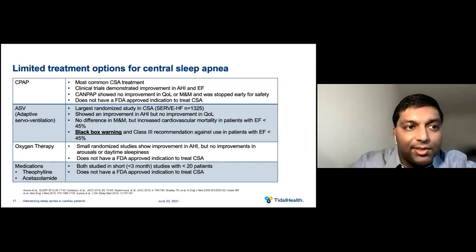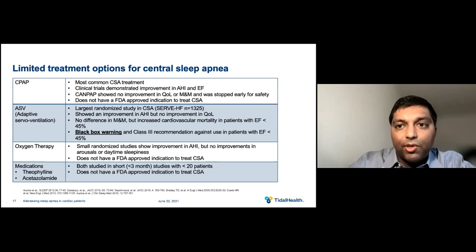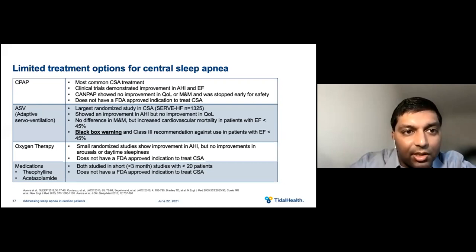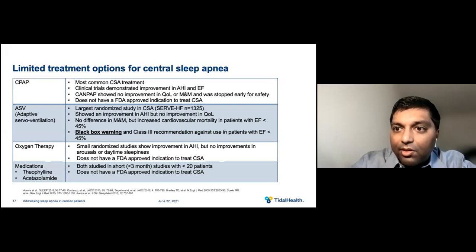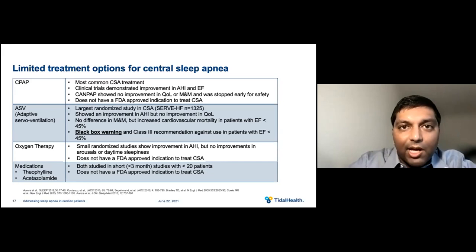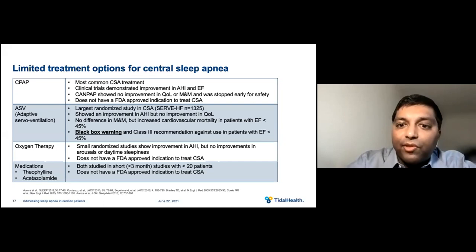Let's talk about the limited treatment options for central sleep apnea. First, CPAP, or continuous positive airway pressure, is the most common — the patient wears a mask connected to a machine which provides continuous air to keep the airway open. Some clinical trials have demonstrated improvement in AHI and ejection fraction. However, the CANPAP trial showed no improvement in quality of life or morbidity and mortality and was stopped early for safety. CPAP does not currently have an FDA-approved indication to treat CSA. One reason for safety issues is the increased thoracic pressure from applying CPAP, which causes adverse effects on the preload and afterload of both ventricles, potentially worsening cardiac function.